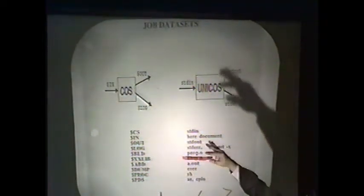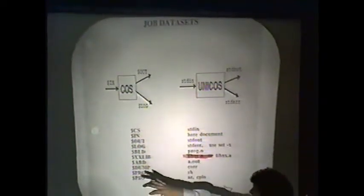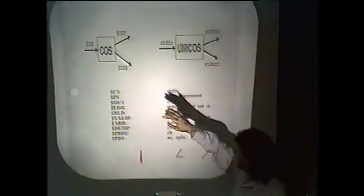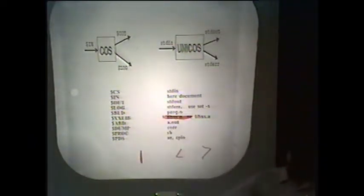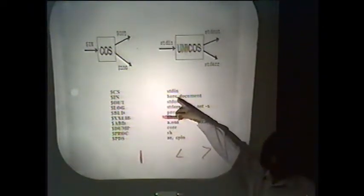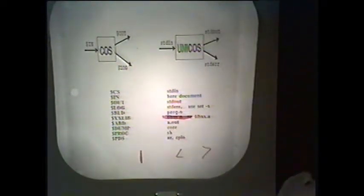In UNICOS, these are known as standard in and standard out. The only thing that relates to $log would be standard error. It's not a one-to-one comparison — it's apples and oranges. Standard error is going to give you things like compiler error messages and things you don't want to go into your data. Looking at all of our files: $cs is our control statements, our JCL stuff — this is what's basically in standard in, what's being typed into the terminal to the shell. $in is an implicit local data set concept — it puts data actually in the job. The comparable thing in UNICOS is a HERE document, which is standard Unix type stuff that puts the data right in the job.